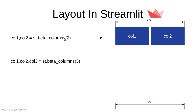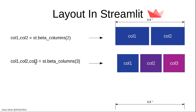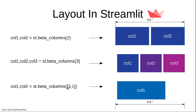For three columns, you call `st.beta_columns(3)` and unpack into `col1, col2, col3`. You can also specify different widths by passing a list — for example, `[3, 1]` for two columns where the first column is three times bigger than the second. The number you specify determines how the space is partitioned relative to the others.